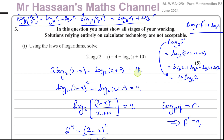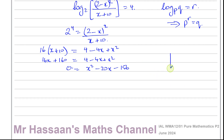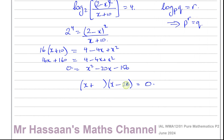Now we have to solve this. I'm going to use factorizing. We need two numbers that multiply to give negative 156 and add to give negative 20. Trying 26 and 6 — the difference between them is 20, and 26 times 6 is 156. The 26 has to be the negative one and 6 has to be positive. So we have x equals negative 6 and x equals 26.